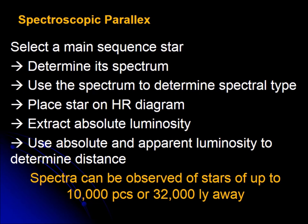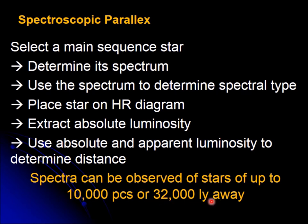The other method is spectroscopic parallax. For this one, you look at a galaxy, find a main sequence star, look at the spectrum, and determine the spectral type — it's going to be an M, O, B, etc. Knowing it's an O or a B or an M, and knowing it's a main sequence star, it can be placed on the H-R diagram. Once it's on the H-R diagram, we can extract the absolute luminosity, and that along with the apparent luminosity will give us the information needed to obtain the distance. This can be done for stars up to 32,000 light years away.